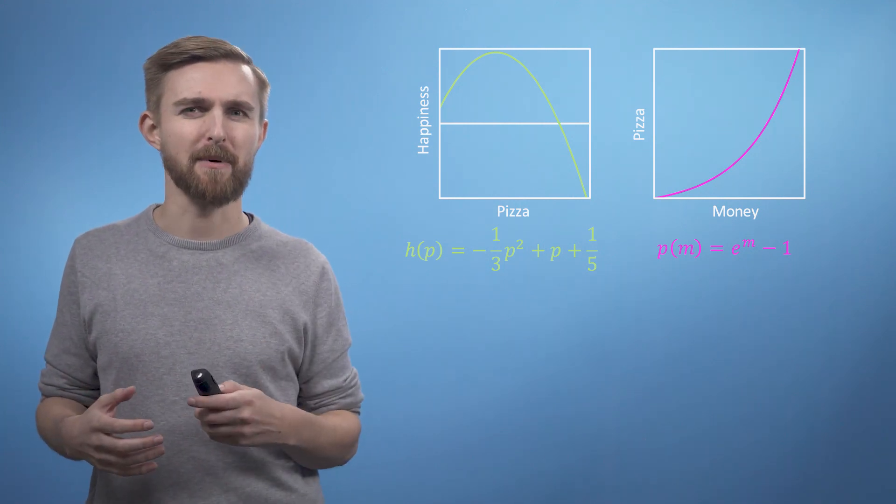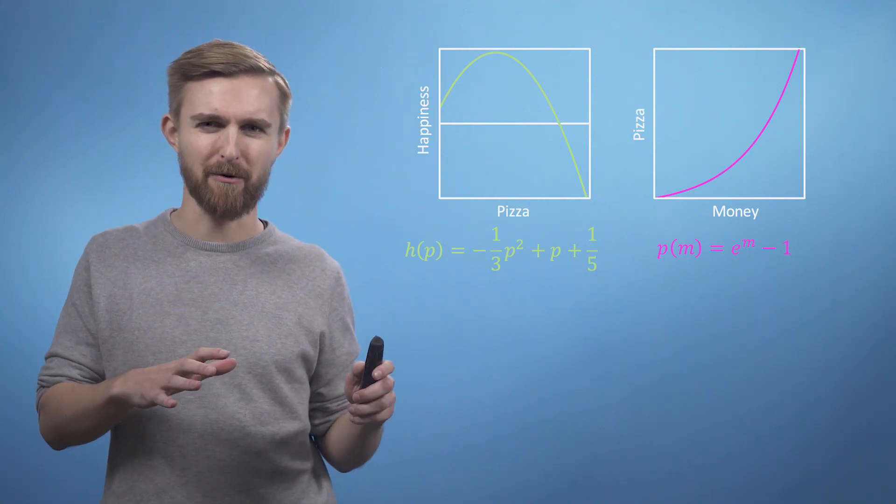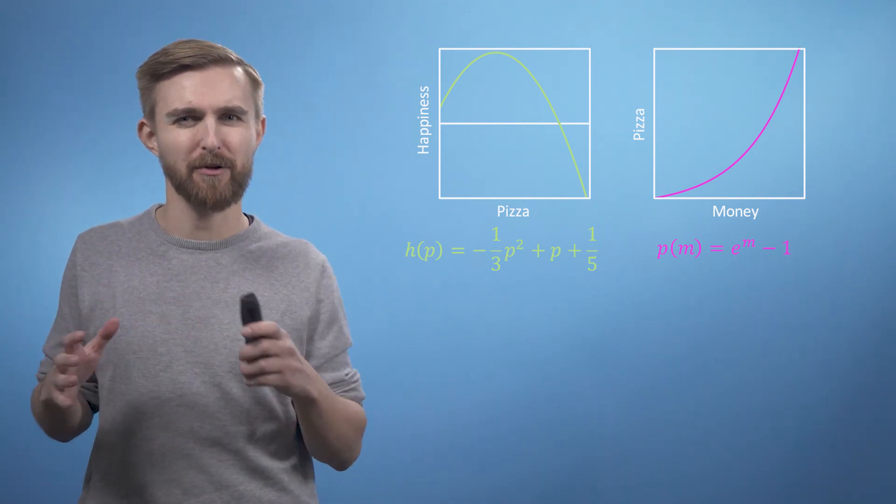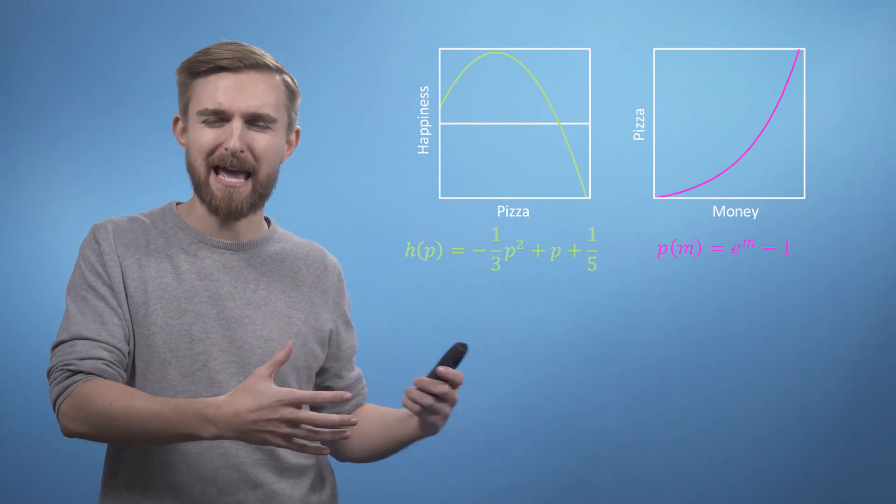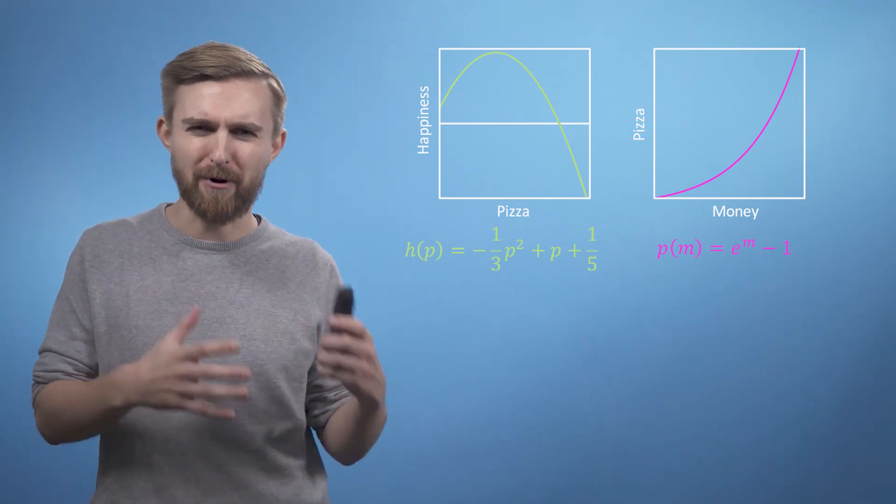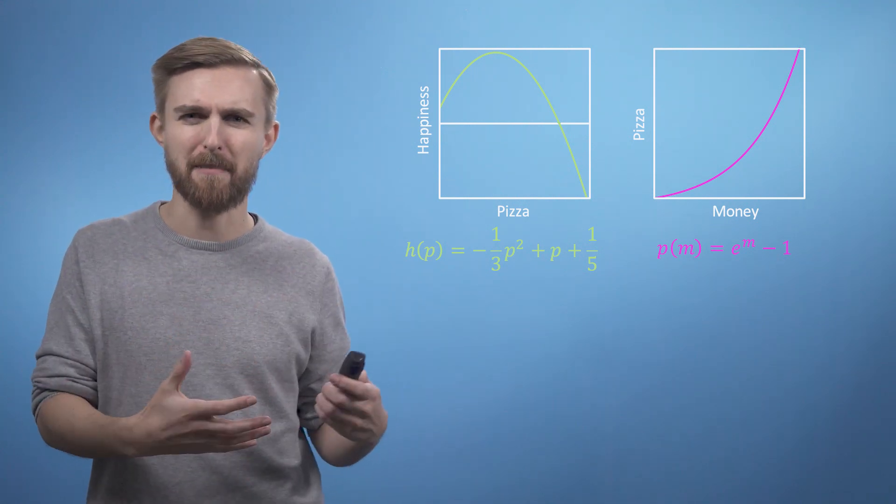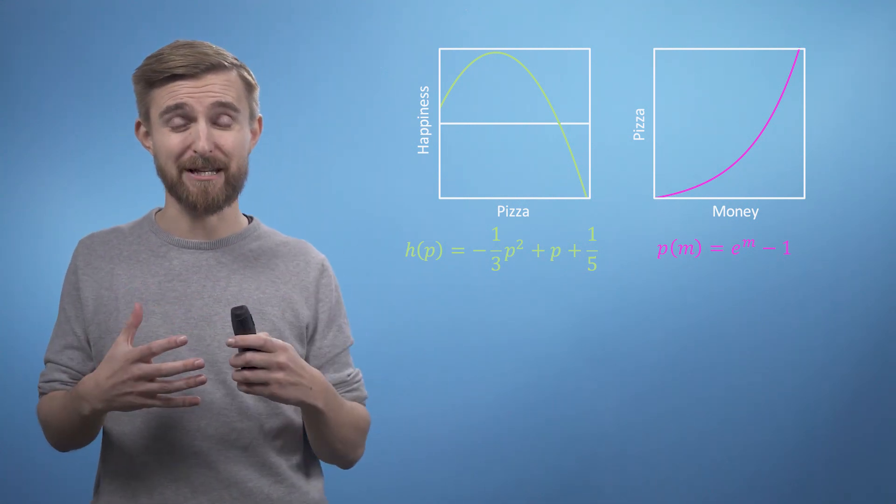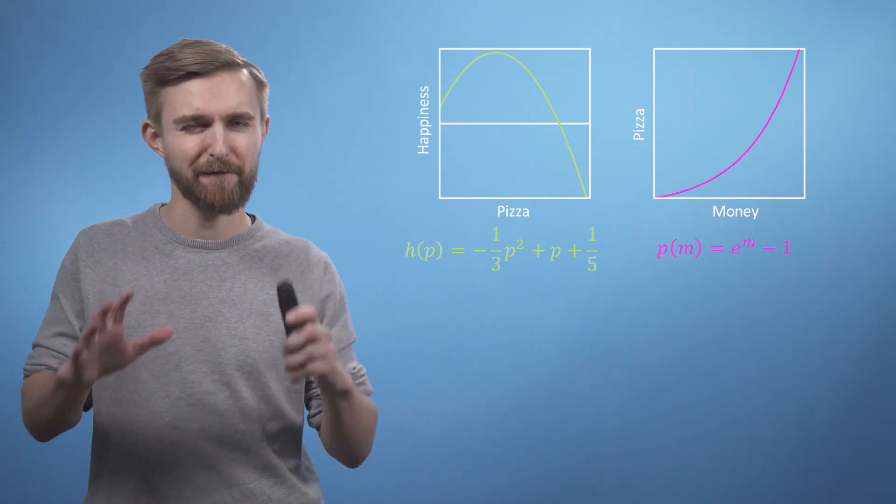What we'd like to know is, by considering how much money I have now, how much effort should I put into making more if my aim is to be happy? To work this out, we're going to need to know what the rate of change of happiness is with respect to money, which is of course just DH by DM.